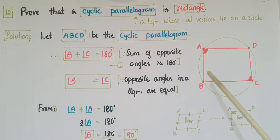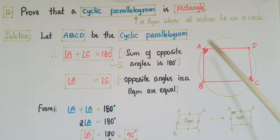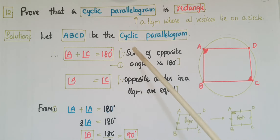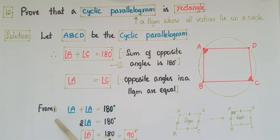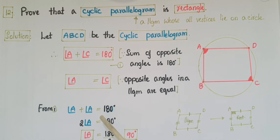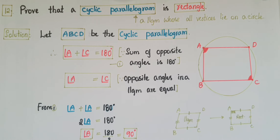We know that in a cyclic quadrilateral, the sum of opposite angles is 180 degrees. So in this cyclic parallelogram, angle A plus angle C equals 180 degrees — this is the first equation. We also know that in a parallelogram, opposite angles are equal, so angle A equals angle C. Substituting into the first equation, angle A plus angle A equals 180 degrees, so two times angle A equals 180 degrees, therefore angle A equals 90 degrees.